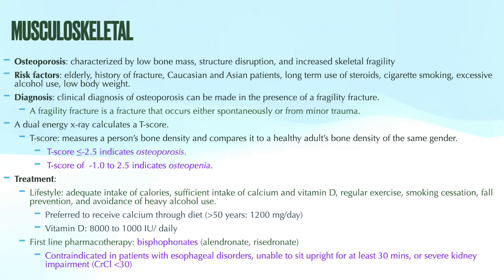If your patient has osteoporosis, or osteopenia with these risk factors, we should be treating them. As always, lifestyle measures are a foundational plan of care. These include avoiding tripping and falling, avoiding malnutrition, ensuring sufficient intake of calcium and vitamin D, regular exercise, smoking cessation, and avoidance of heavy alcohol use — all very important components in managing patients with osteoporosis or osteopenia with high risk factors.